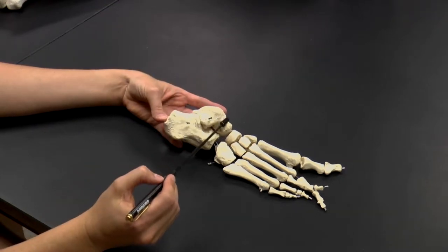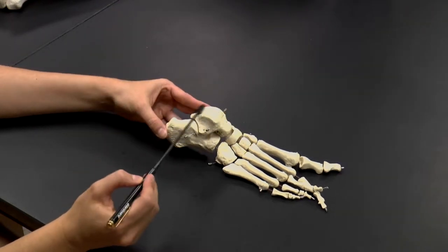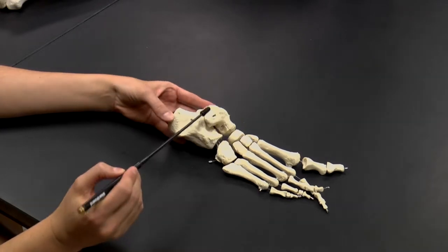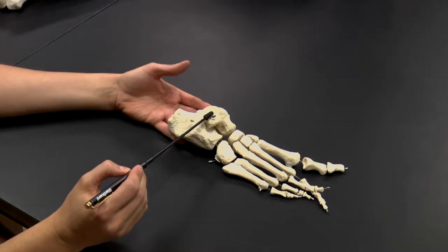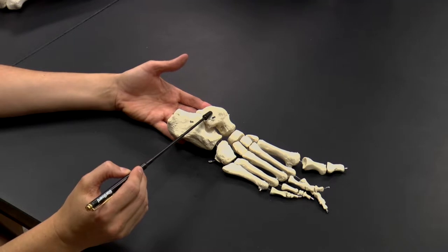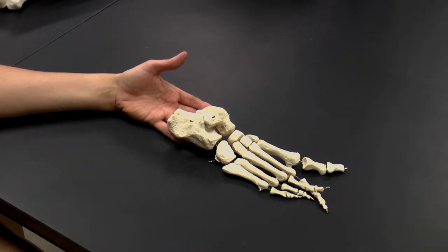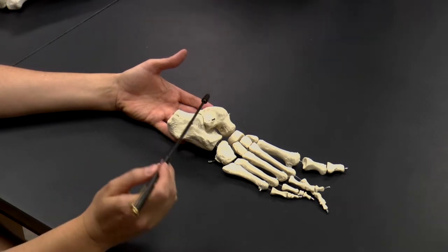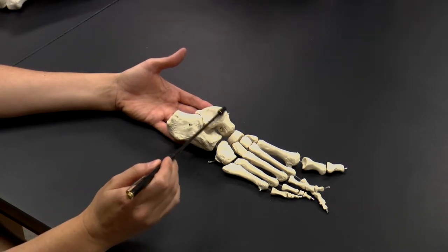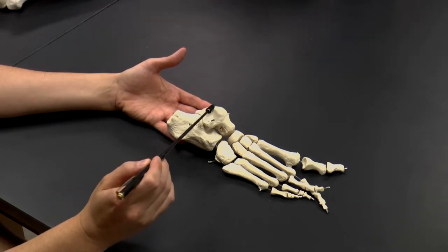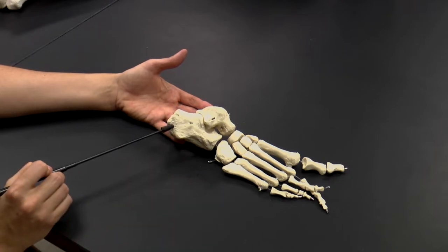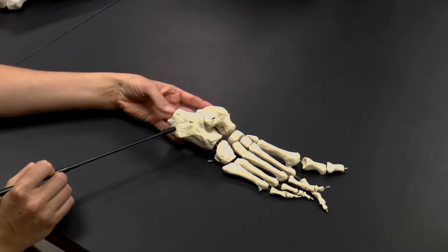And the other one is this bone here that has this slight hinge-type structure, and this is called the talus bone. This forms the ankle joint with the lateral and medial malleoli of the tibia and the fibula. So here's our talus bone, and it forms the ankle bone. Our ankle bone and our heel bone are two of the seven tarsal bones of the foot.